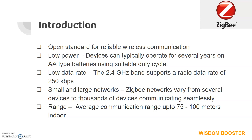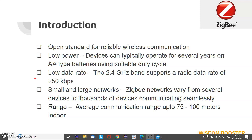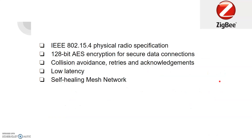ZigBee networks can grow from small to large. The minimum number of nodes in a network can be two, or there can be thousands of nodes in a large network. In upcoming tutorials I will show what kinds of networks it can build. The range is between 70 to 100 meters depending on how the antenna is configured.